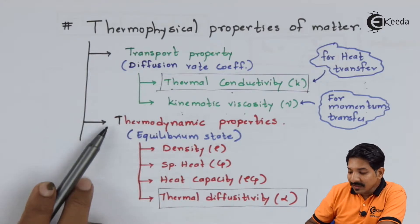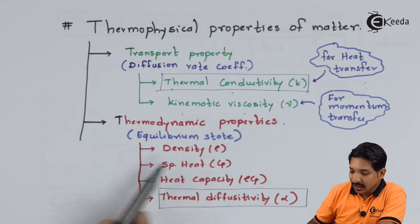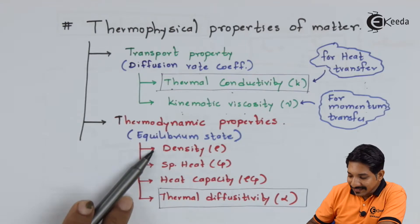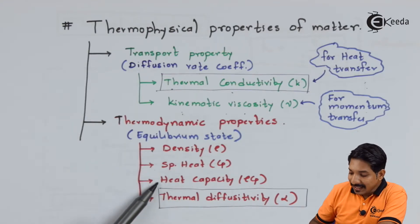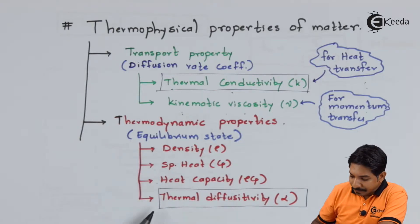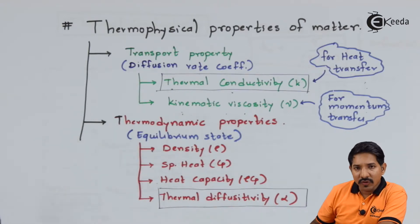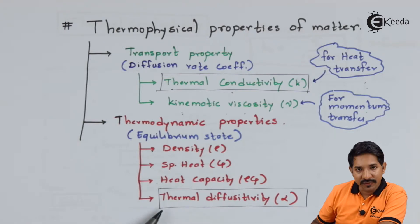The second category is thermodynamic properties, which deal with equilibrium state. There are four properties: density, specific heat, heat capacity — which is the product of density and specific heat — and thermal diffusivity. Out of all these, we are going to discuss thermal conductivity and thermal diffusivity in detail.